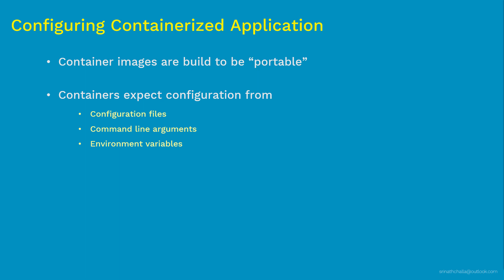So how do we apply this configuration to the container? Typically three ways. One: from configuration files — we can copy configuration files into the container target location, maybe the /etc directory on Linux. We can also pass them as command line arguments or as environment variables. These configuration formats can be INI, XML, JSON, or any custom formats that application containers can read and understand. So the question is how this configuration is handled inside pods in Kubernetes.